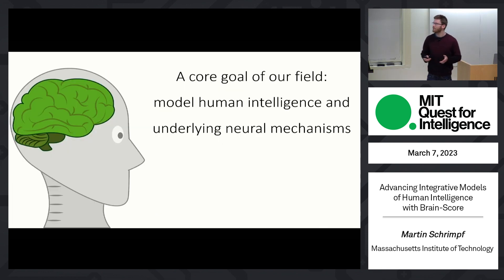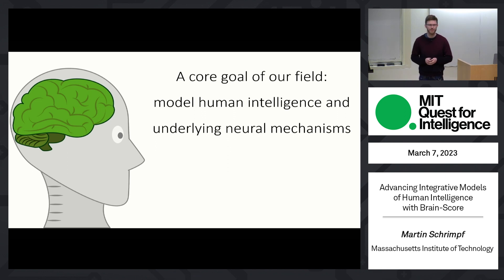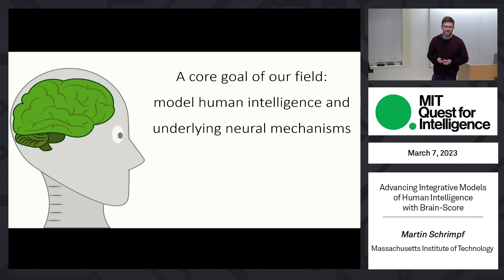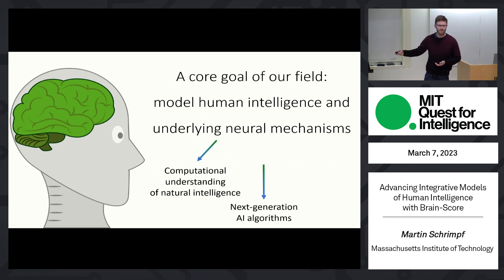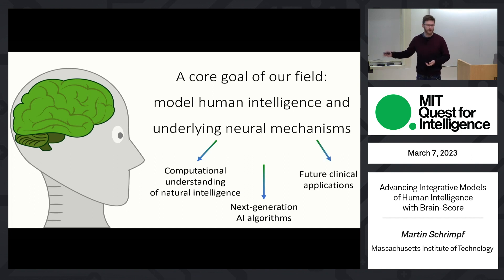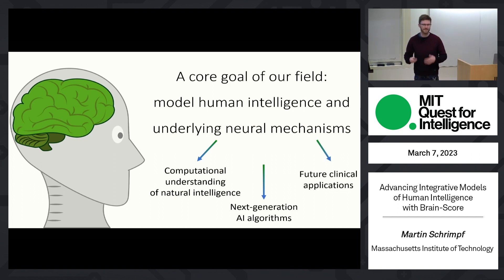A core goal of our field — loosely computational neuroscience — is to model human intelligence as well as the neural mechanisms that underlie it. We think this is exciting because it might provide us with a computational understanding of intelligence, lead to the next generation of AI, and potentially help with things like neural disorders and help cure those brain disorders.